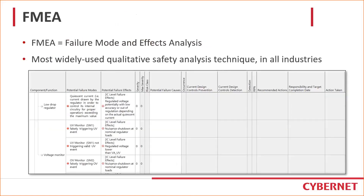I will go through three types of safety analysis techniques commonly used in the automotive industry. First is FMEA — Failure Mode and Effect Analysis. This is the most widely used qualitative safety analysis technique across all industries, not just automotive. It is basically a table where we document the components being analyzed, all potential failure modes, the potential failure effects, and the corresponding failure causes. We then examine the current design controls in terms of prevention and detection and document the potential failures or weaknesses of our design.